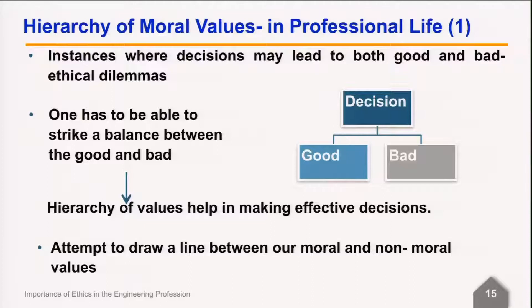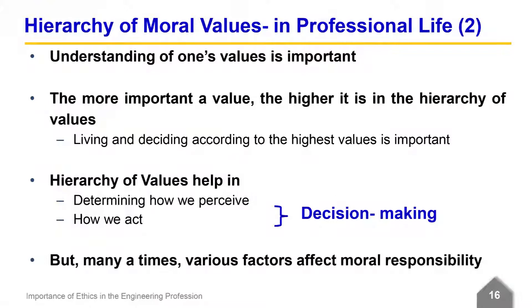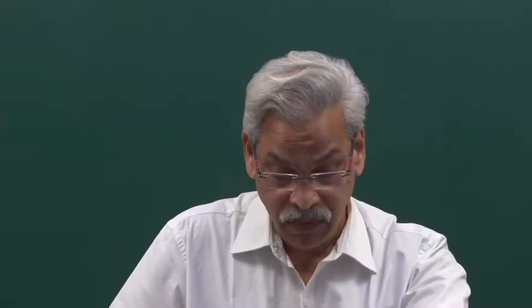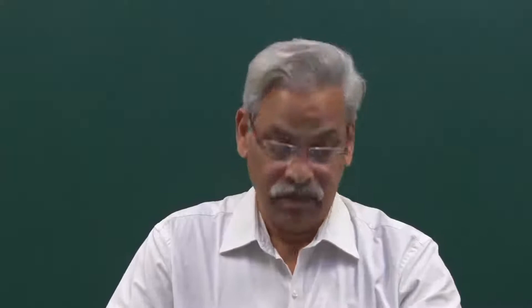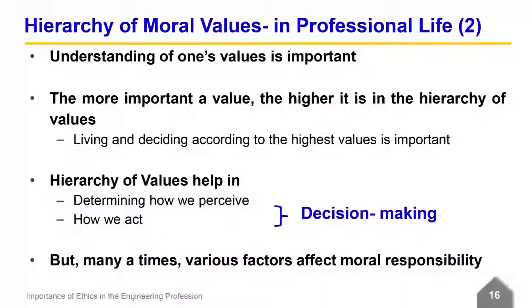In this critical juncture, the hierarchy of values helps in making effective decisions. There ought to be a clear line between our moral and non-moral values, and we need clarity on our own values first. The more important a value, the higher it is in the hierarchy. The hierarchy of values helps us perceive an issue, a policy, or a problem and gain perspective, then initiate action — a combination of these leads to a decision. Many factors affect moral responsibility.